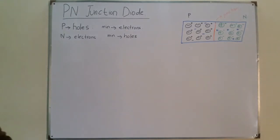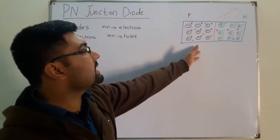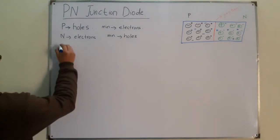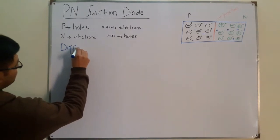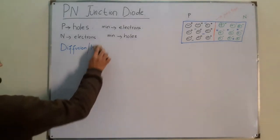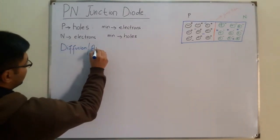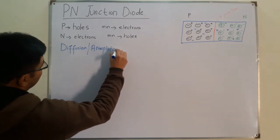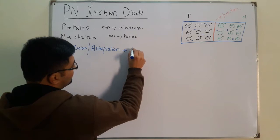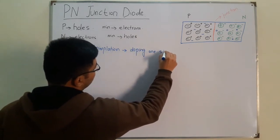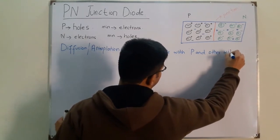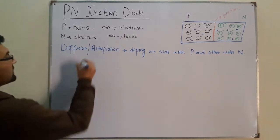We have taken a semiconductor base. One side is doped with P type material and the other is doped with N type material. This process is called diffusion or implantation — the process of doping one side with a P type impurity and the other side with an N type impurity.